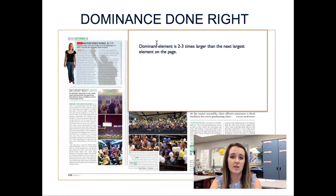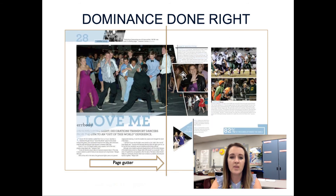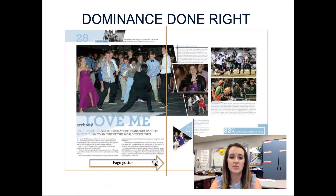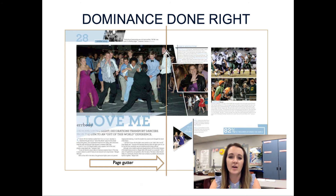Here we can see dominance done right. The dominant element would be two to three times larger than the next largest element on the spread — that's about how big that photo should be. Here you can see where the page gutter would be. This photo is no good because this person's head is stuck in the gutter. Don't be in the gutter — we don't want to make any gutter rats. He would lose his head and it would be very awkward, so we'd want to crop or move this photo so we're not losing the person into the gutter.